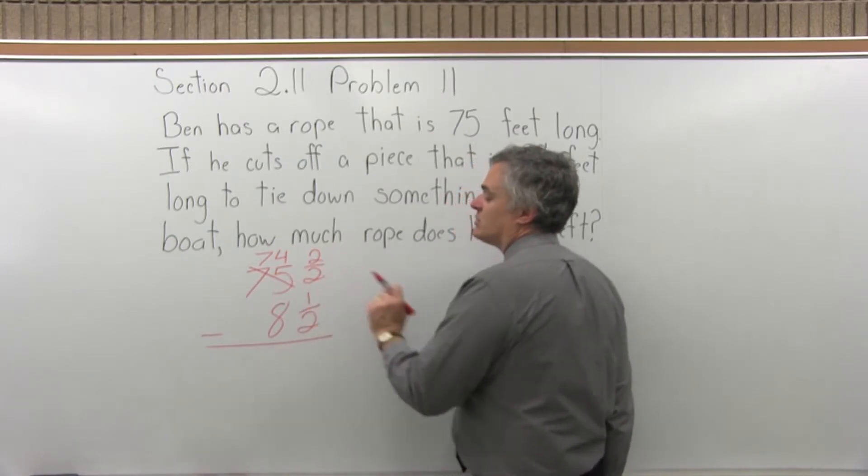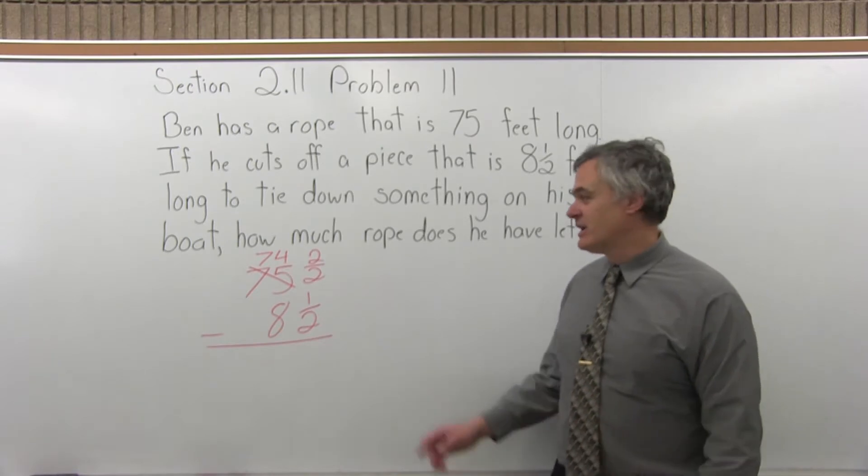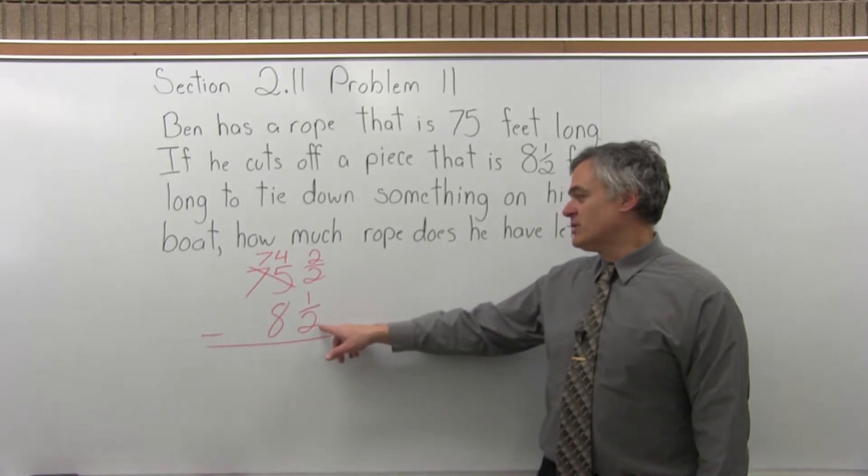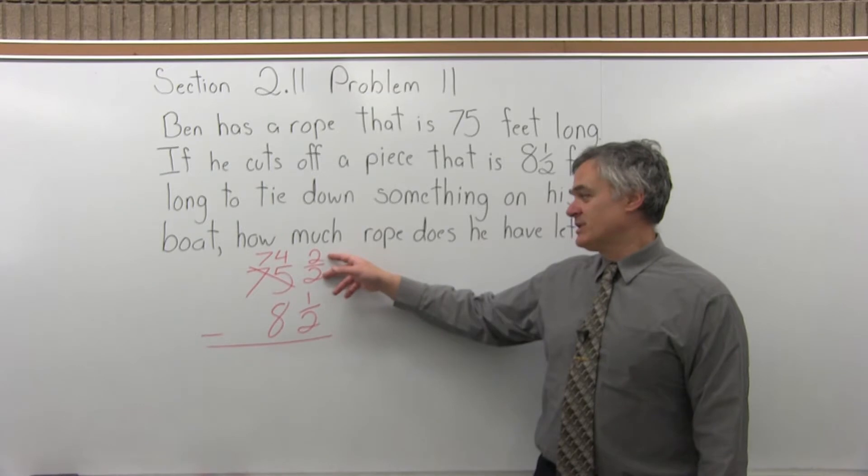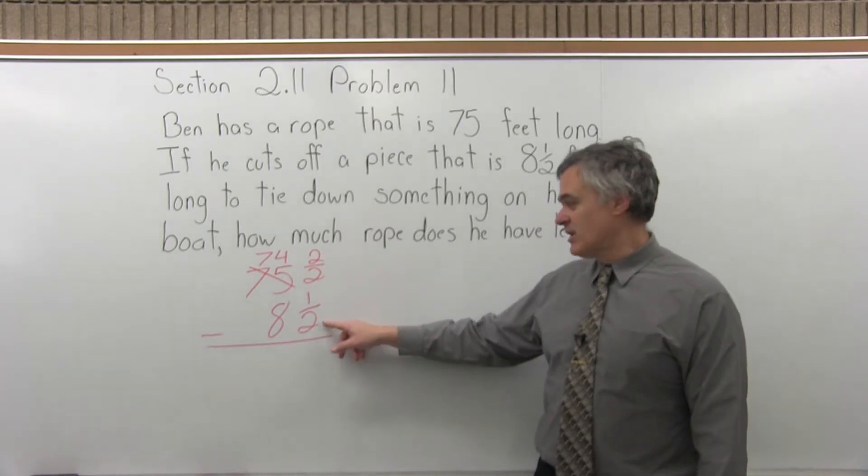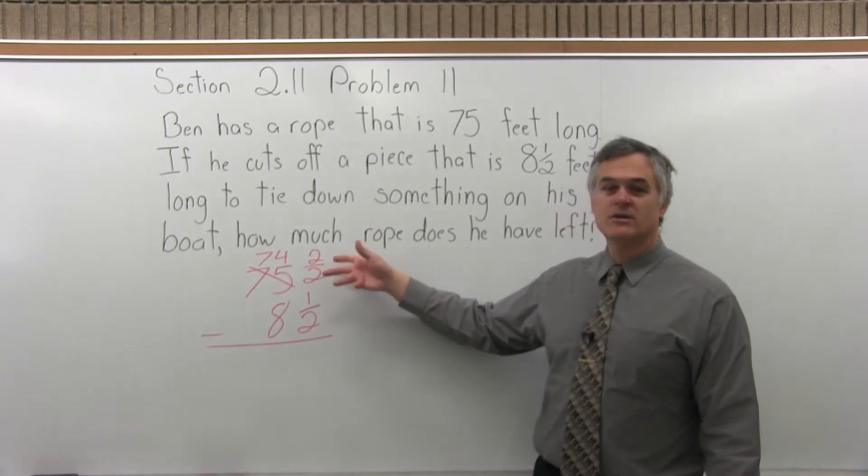And I chose 2 over 2 so the denominators would match, so I'd have a common denominator. So if the denominator of the other fraction was, say, 7, I'd want this to be 7 over 7. Whatever the denominator is for the lower fraction, I want to match it.